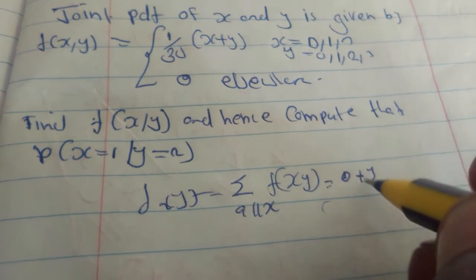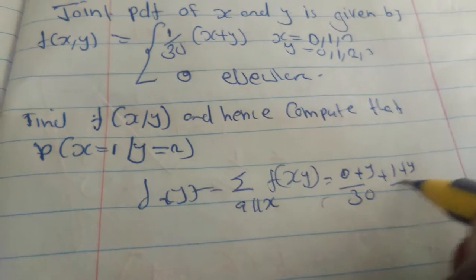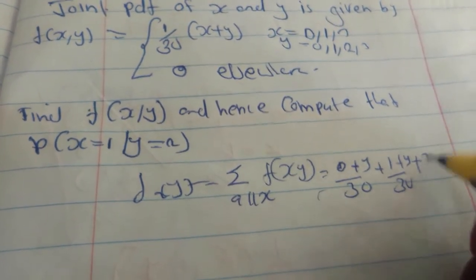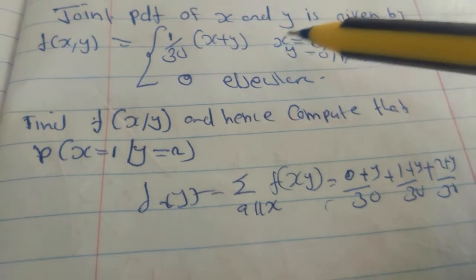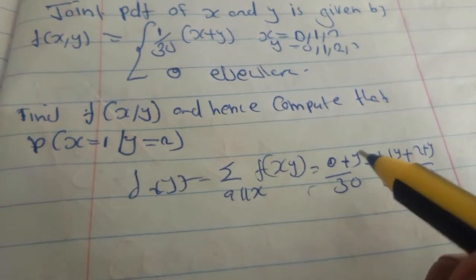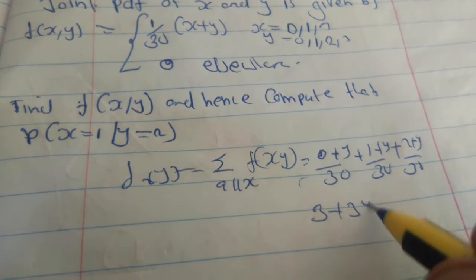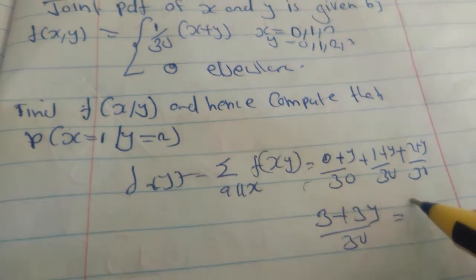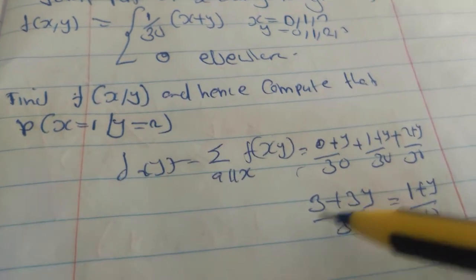We are going to substitute all values of x. So we are going to get 0 plus y over 30 plus 1 plus y over 30 plus 2 plus y over 30. This one is 3 plus 3y over 30.